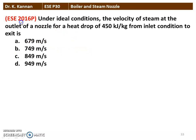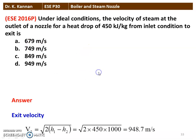Next question from the 2016 question paper: under ideal conditions, the velocity of the steam at the outlet of the nozzle for a heat drop of 450 kJ/kg from inlet to exit. V₂ = √(2 × (H₁ − H₂)) = √(2 × 450 × 1000) = 948.7 m/s. The answer is option D: 949 m/s.